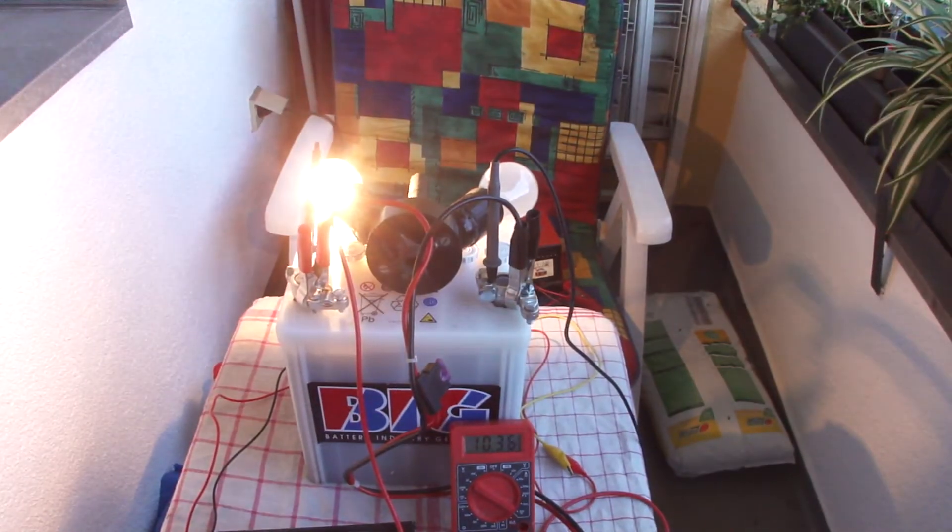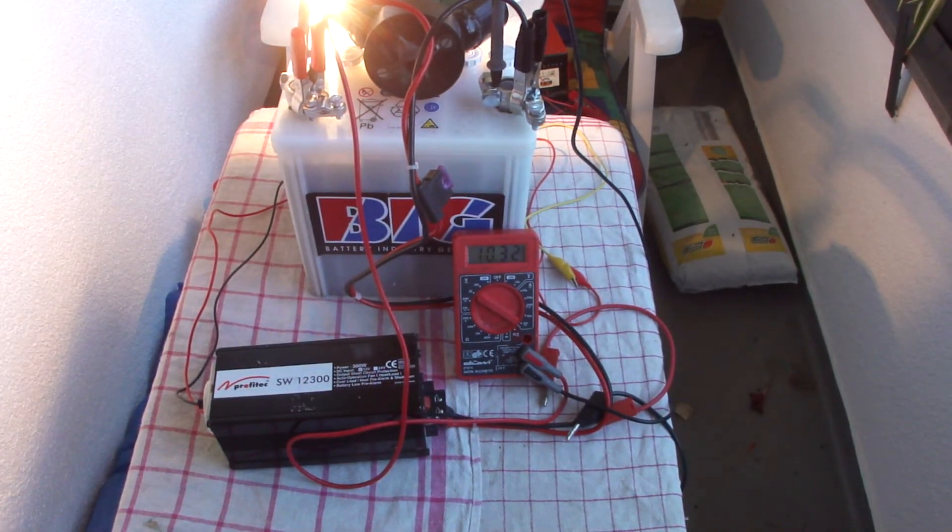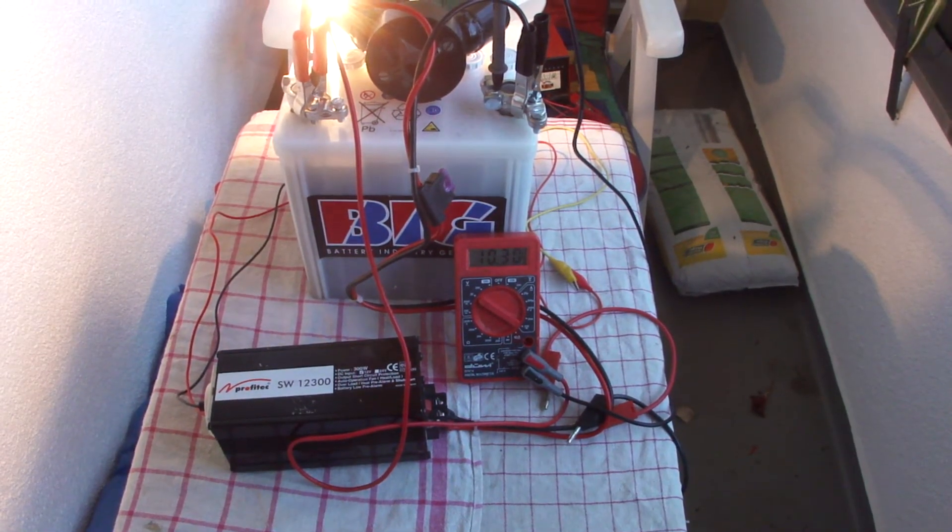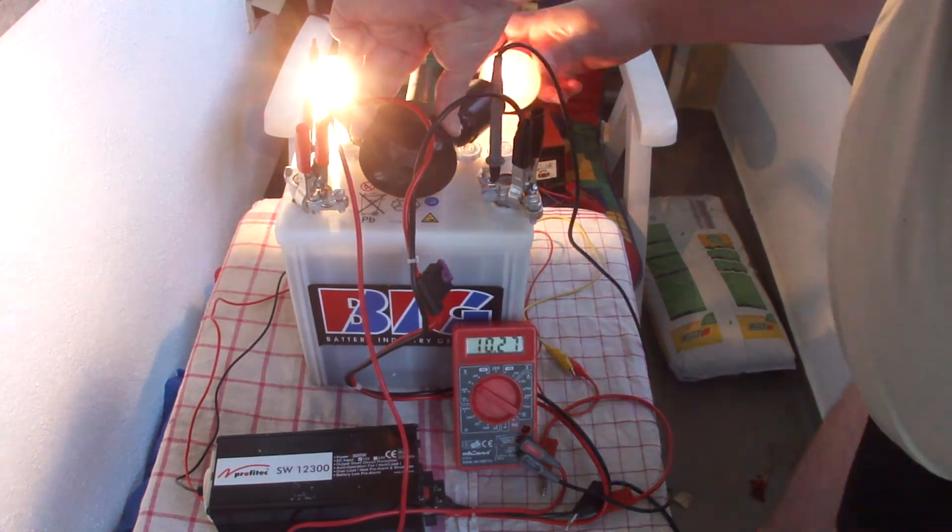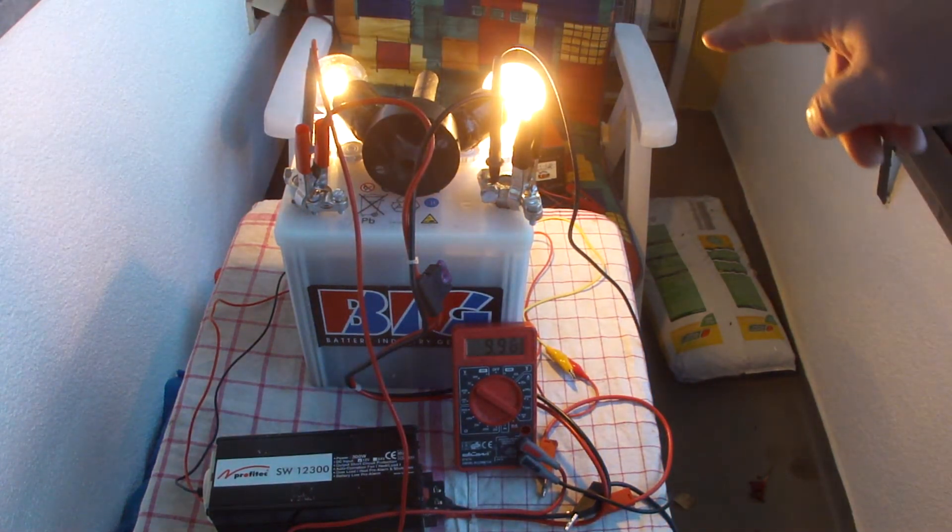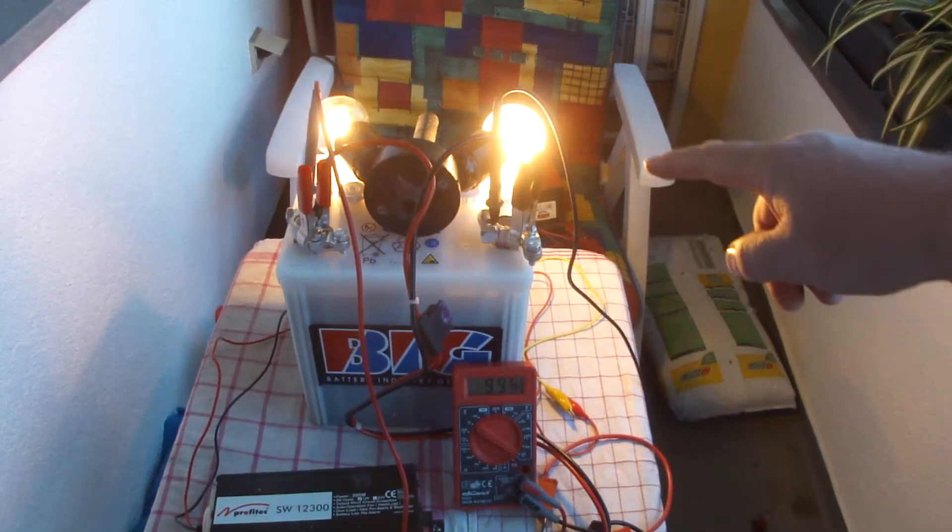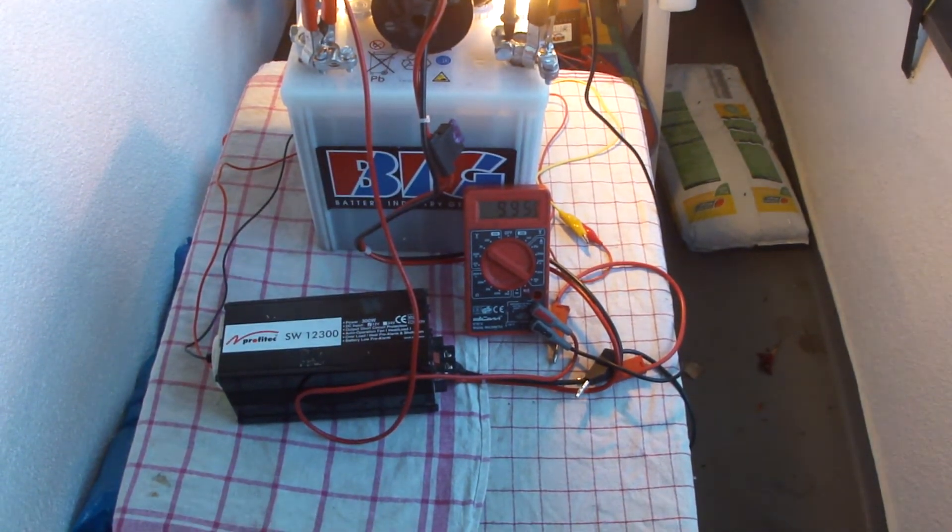Now we have the light on. The voltage goes down. This is only a 28-watt halogen bulb. Now we connect the 100-watt bulb also over here. You can see the inverter is already beeping, and voltage is only 9.8, 9.9, something like this.